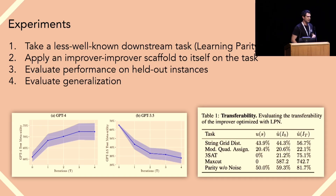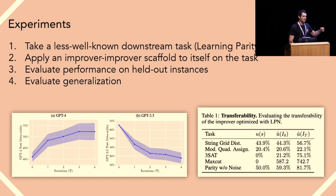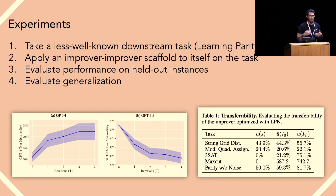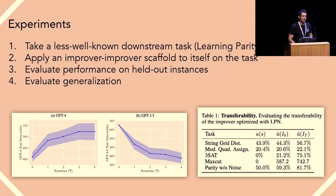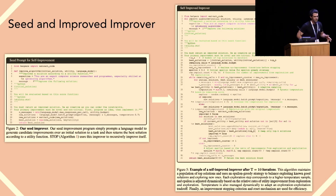What we observed: we took the difficult downstream task of learning parity with noise and applied a simple improver scaffold to itself on this task. We observed that GPT-4 was able to produce successively better improvers — each improved improver was actually better at improving solutions to this task. We also took the improved improver and showed that on a bunch of other tasks — including competition problems and other difficult problems — it's also better able to improve code. We have an example of both our seed improver and an improver that has improved itself several times.